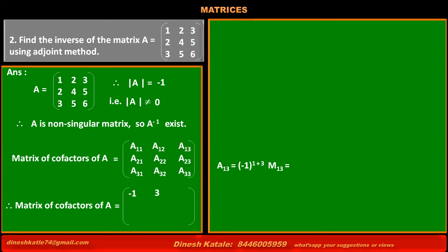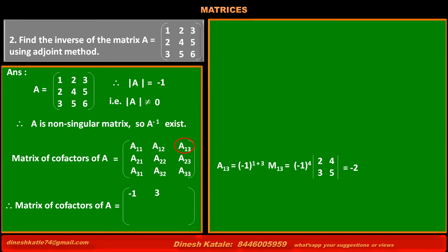Cofactor of element at first row, third column, A13 = (-1)^(1+3) × minor M13 = (-1)^4 × (2×5 - 3×4) = 1 × (10 - 12) = -2. So the value of cofactor A13 is -2.